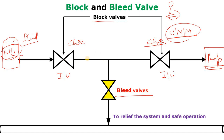Now when both these block valves are closed, ammonia will be trapped inside this line — or any other toxic and explosive gas will be trapped within this line.